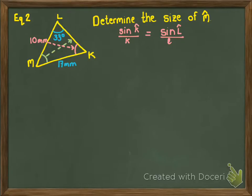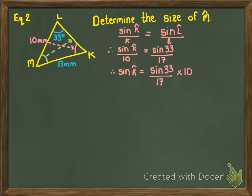So, always remember, if you know two angles, you can find the third. So, I've deliberately set it up with sine angle K at the top, so that it's easier to set up. Sine angle K over k equals sine angle L over l. So, I'm going to substitute my 10, my 33, and my 17. And I'm going to multiply by 10 on both sides to get an answer for sine angle K.